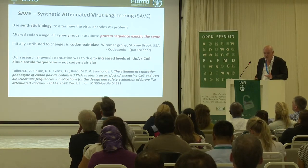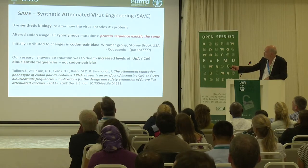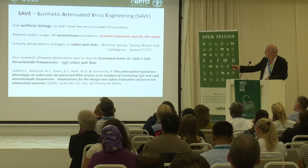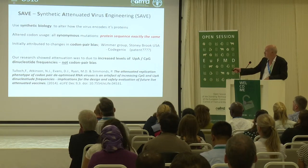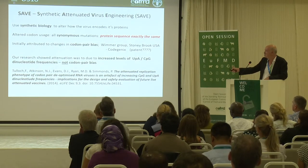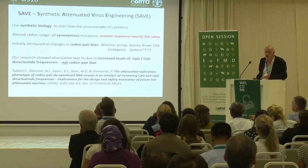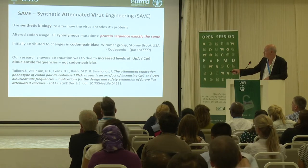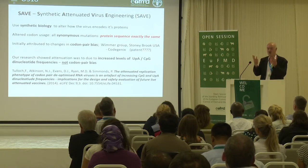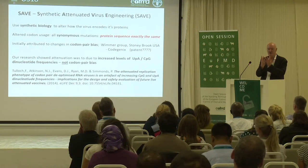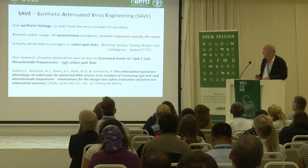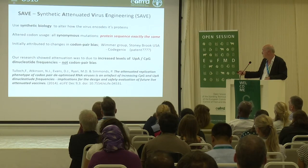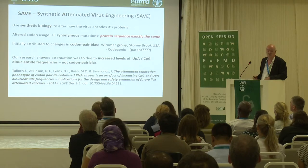This is not technology that we invented — it goes back quite some time. The acronym is SAVE: Synthetic Attenuated Virus Engineering. The idea is to use synthetic biology to alter how the virus encodes its proteins by altering codon usage. All the mutations introduced are synonymous — no coding changes in any of the virus proteins; it's exactly the same sequence. This was initially attributed to changes in codon pair bias — adjacent codon pairings that biology in RNA viruses selects against. On that basis, a group took out a patent and formed a company to make live attenuated vaccines.